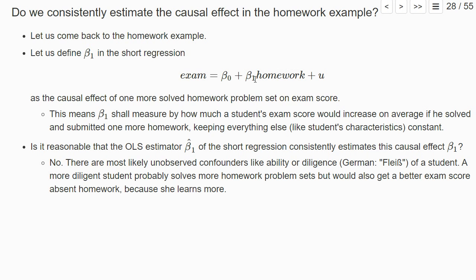And now we explicitly state that beta 1 shall measure the causal effect of one more solved homework on a student's exam score. Now is it reasonable that the OLS estimator of this short regression consistently estimates this causal effect beta 1?